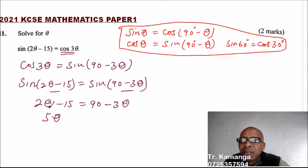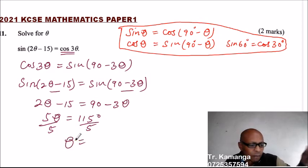2θ plus 3θ, you get 5θ. Take 15 to the other side, you add to 90, you get 115 degrees. Divide both sides by 5. So theta equals, you divide 115 by 5, and that should give you 20.